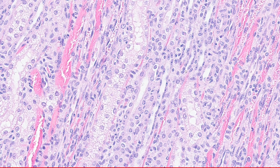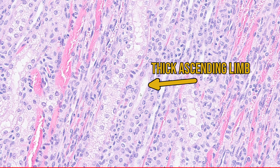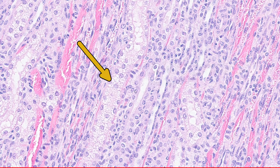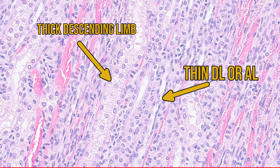Moving to another area, we're still looking for a thick ascending limb, which, if you remember, is going to look very similar to the distal convoluted tubule epithelium. And here we have a lumen — the white space — and next to it, cuboidal pink cells lining in a single layer. So this is a thick ascending tubule. Just for comparison, right next to it we have a thick descending tubule, and on the other side, another lumen with squamous epithelium — either a thin ascending or thin descending limb.